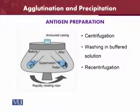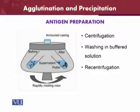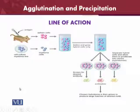For the antigen preparation for the agglutination and precipitation test, centrifugation is involved and is done two times. First we do the centrifugation, then wash the viruses or the antigen with phosphate buffer saline or buffer solution, and then centrifugation occurs again. You can see the line of action of the viruses in this way.